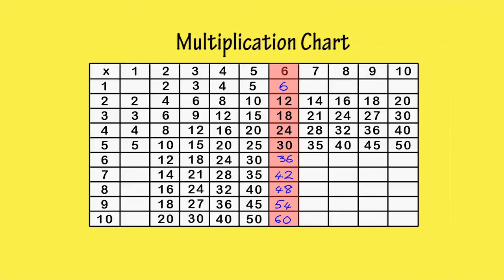We can also complete the 6th row. 1 times 6 is 6. The next 5 boxes are already filled in, which makes our job very easy.